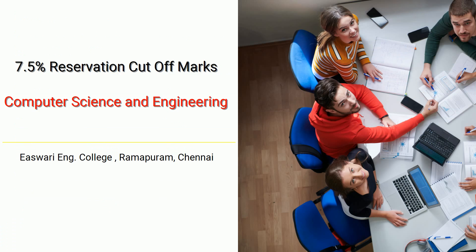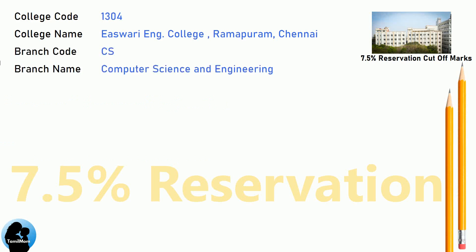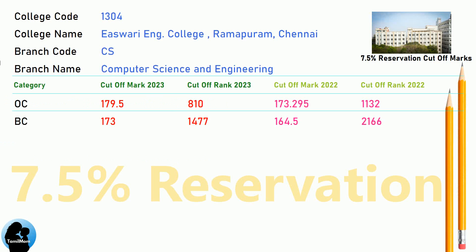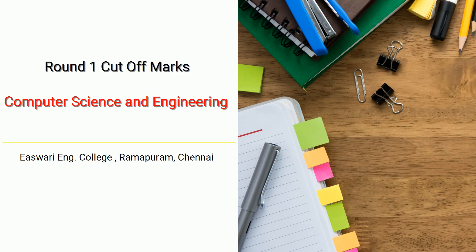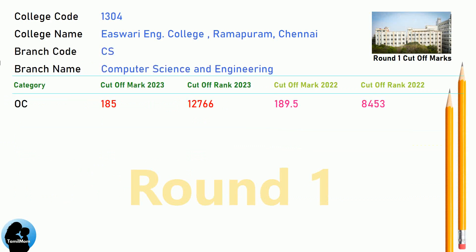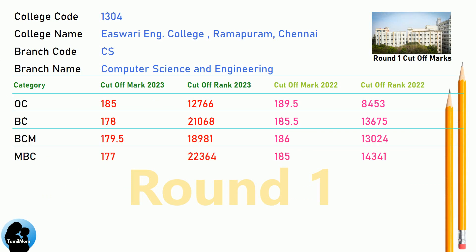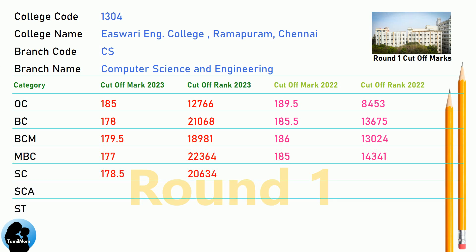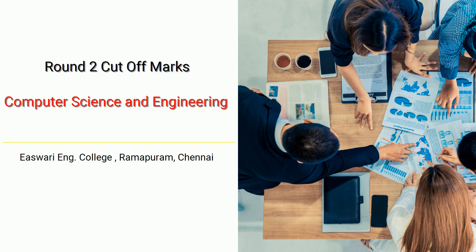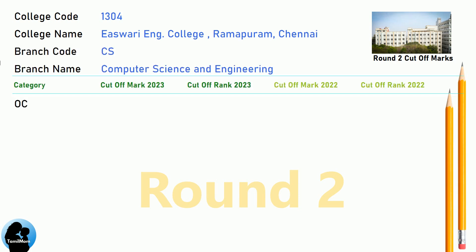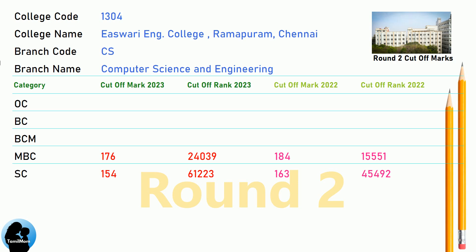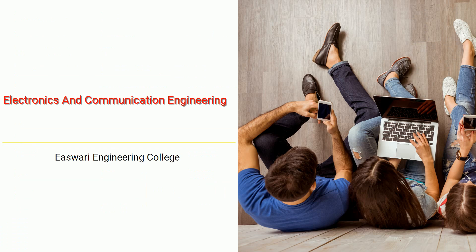DNA 7.5 Reservation Cut-Off for Eshwari Engineering College in Computer Science and Engineering. DNA 8.5 Reservation Cut-Off for Eshwari Engineering College in Computer Science and Engineering. DNA 9.5 Reservation Cut-Off for Eshwari Engineering College in Computer Science and Engineering.